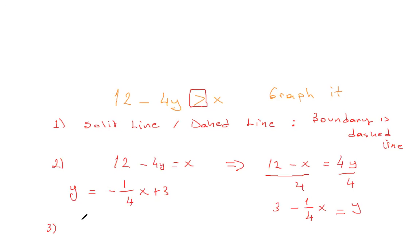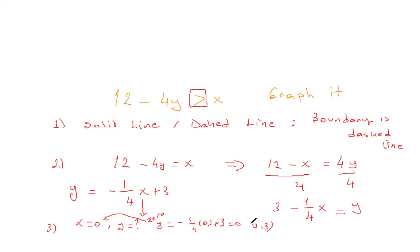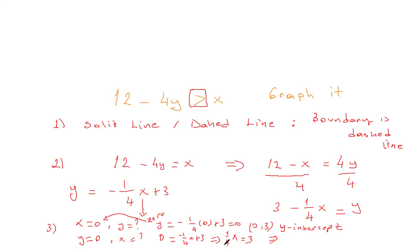The best one is when x is 0 — what is y? So y equals negative one-quarter times 0 plus 3, which gives 0 plus 3, so y equals 3. That means (0, 3) is the y-intercept. Similarly, when y is 0, what is x? We get 0 equals negative one-quarter x plus 3, so positive one-quarter x equals 3, and multiplying both sides by 4 gives x equals 12. So x is 12 when y is 0.